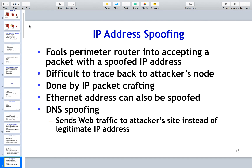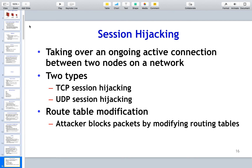IP spoofing attacks fool perimeter routers into accepting packets with spoofed IP addresses. This is very difficult to trace back to an attacker because they can use a series of different routing points — like Tor routers — that conceal the original IP address. Session hijacking, which we'll cover more when we get to web applications, involves taking over an ongoing active connection between two nodes on a network — the attacker gets in between a legitimate user and the server to hijack that session.